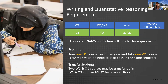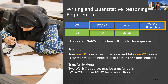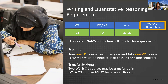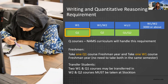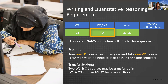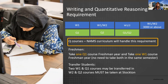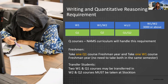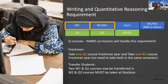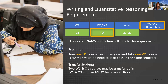To meet the writing requirements, students need to take one W-1 course and three W-1 or W-2 courses. One W-1 or W-2 needs to be at the 3,000 or 4,000 level. To meet the quantitative reasoning requirements, students need to take one Q-1, one Q-2, or either another Q-1 or Q-2 course. For NAMS majors, all Q-course requirements will be taken within the regular course curriculum. If you are a transfer student, two W-1 and two Q-1 courses can be transferred in, but W-2 and Q-2 courses must be taken at Stockton.